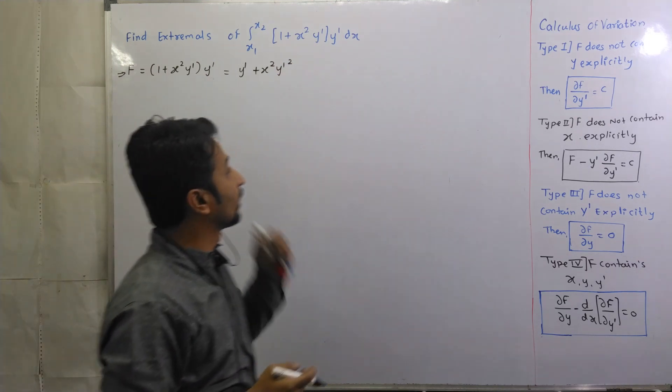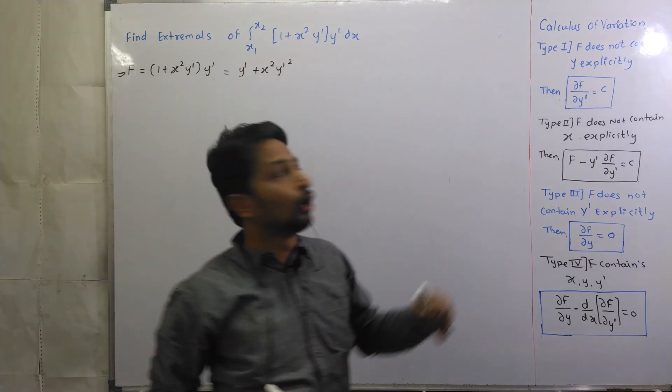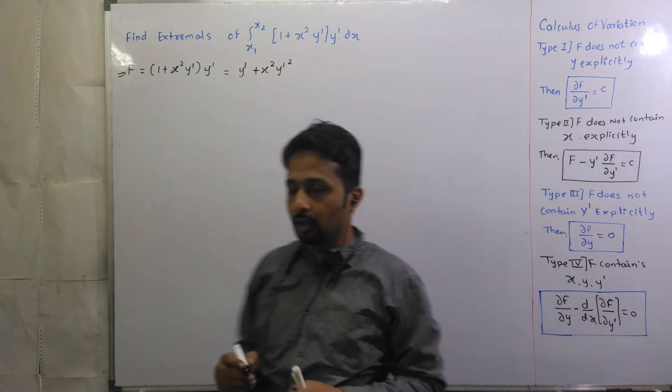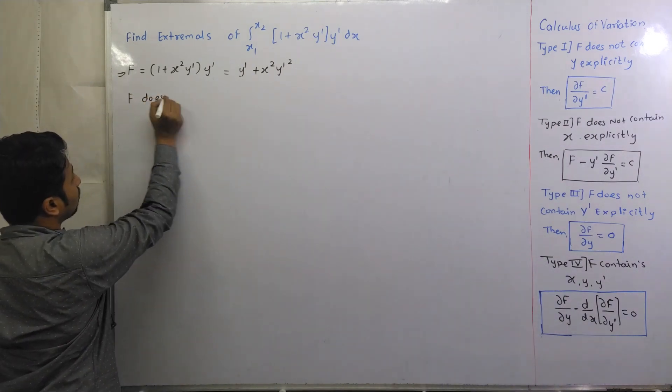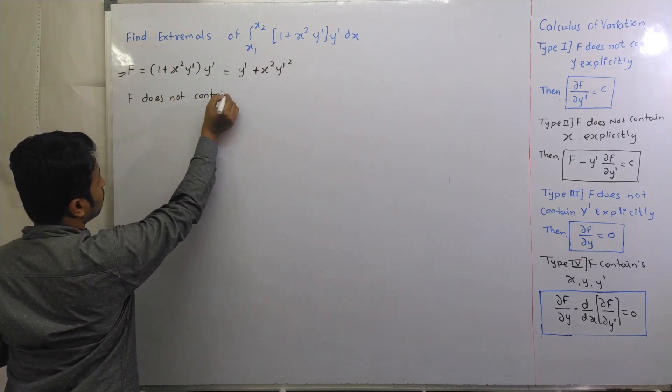Now, type function. It is present, y dash present, y absent. And if f does not contain y, then type function. So here, f does not contain y.